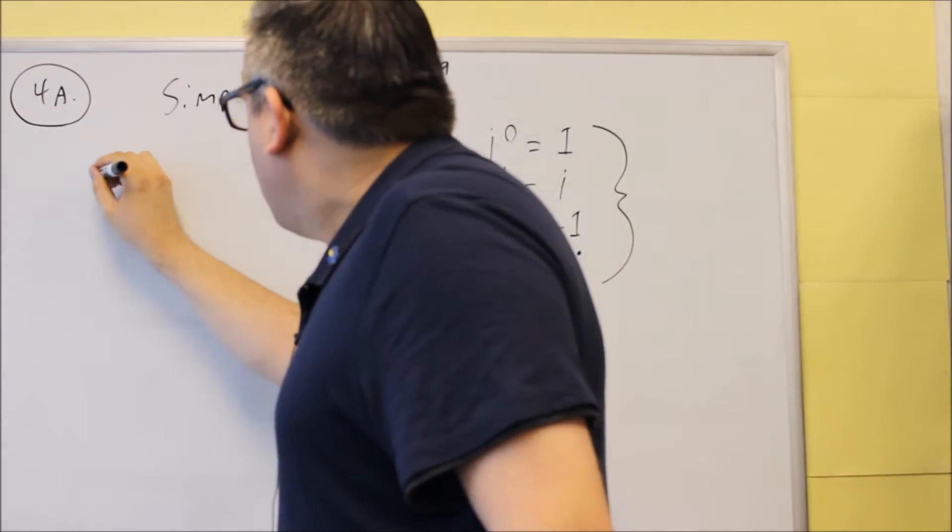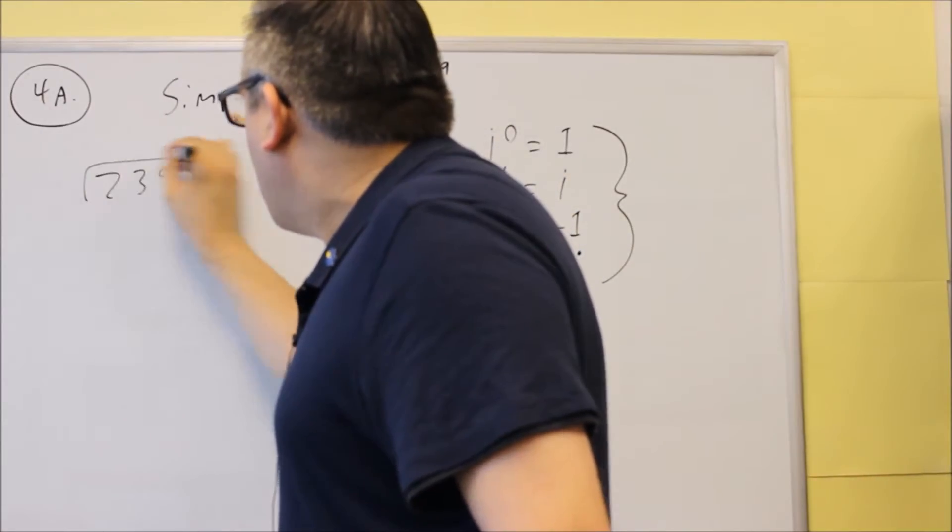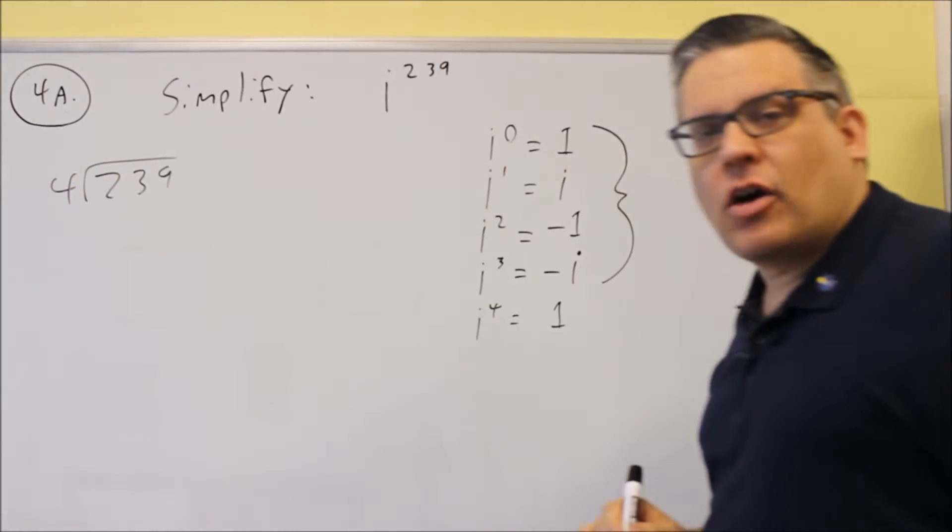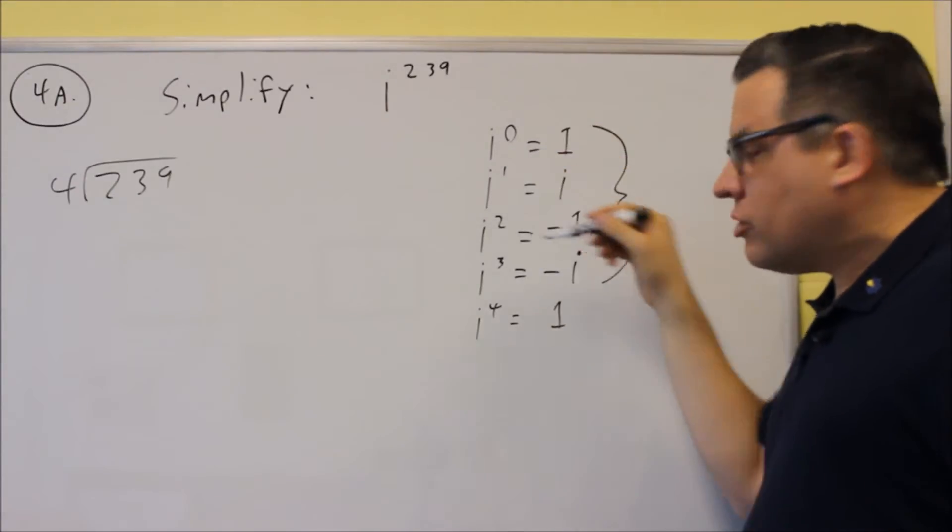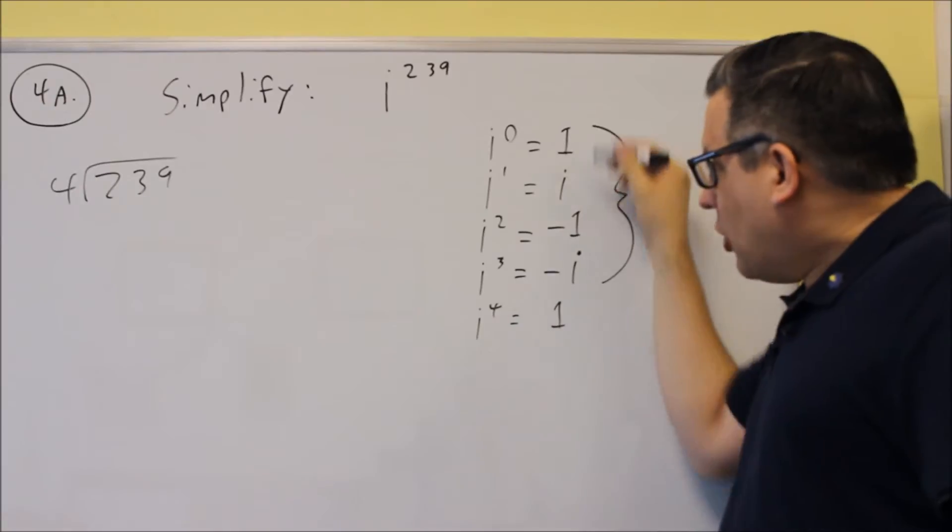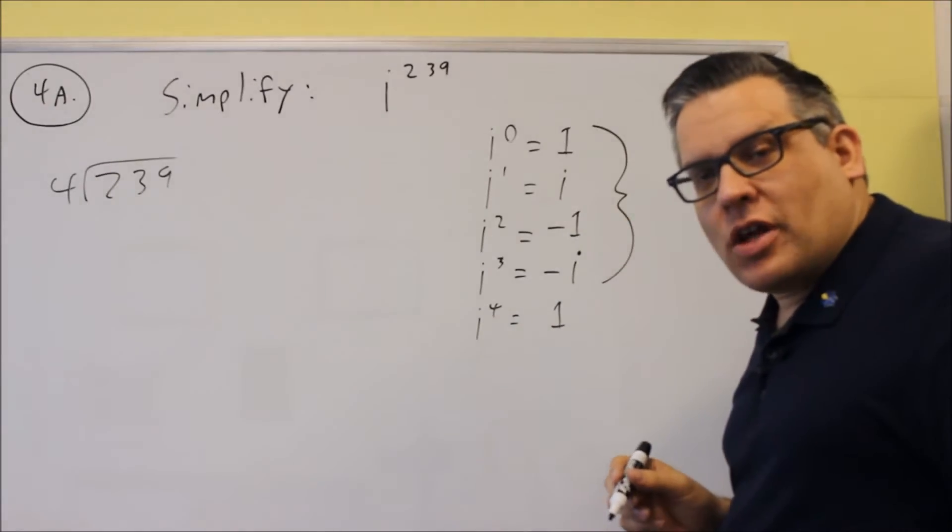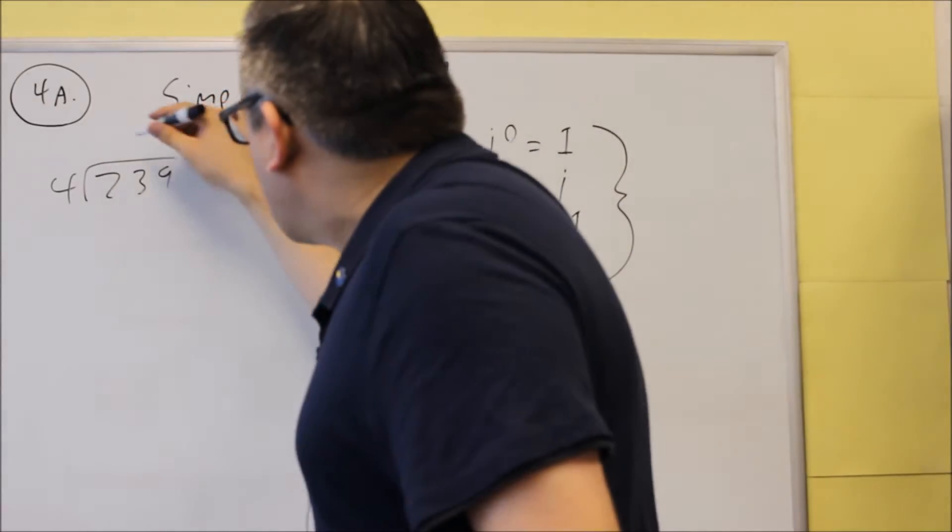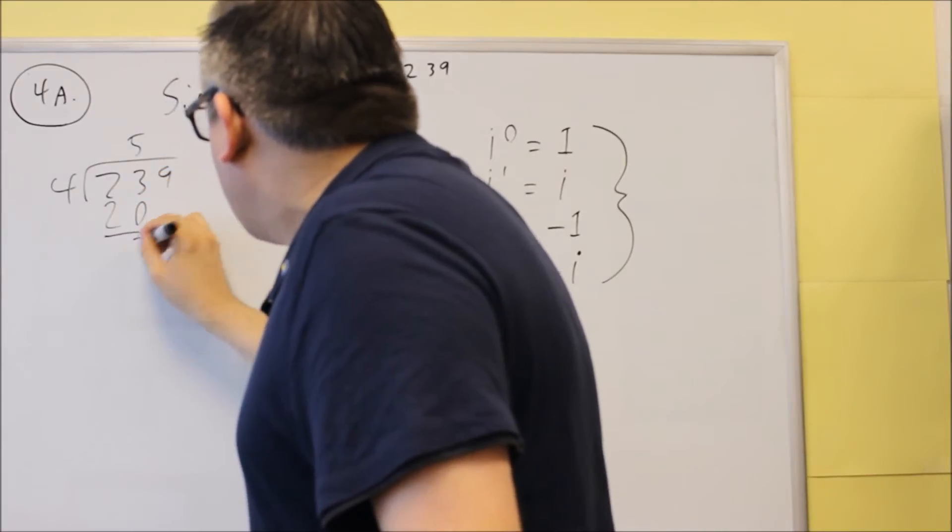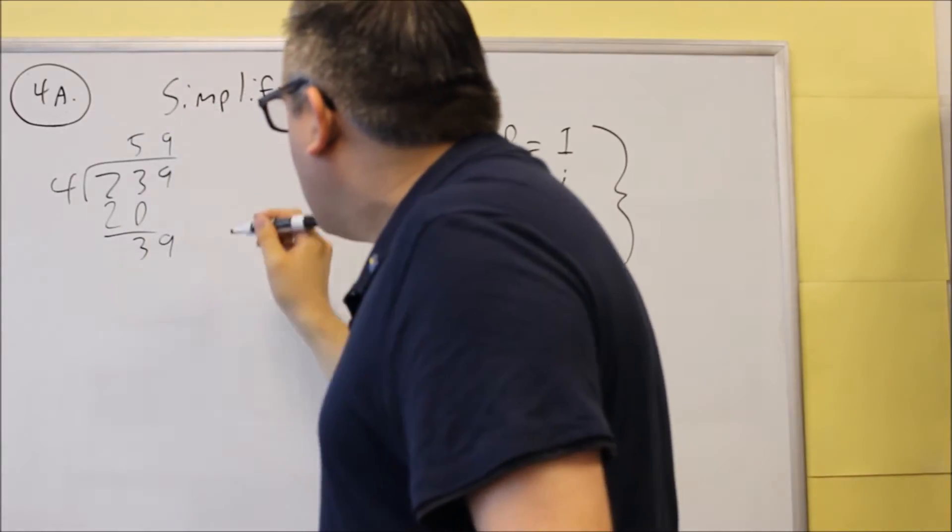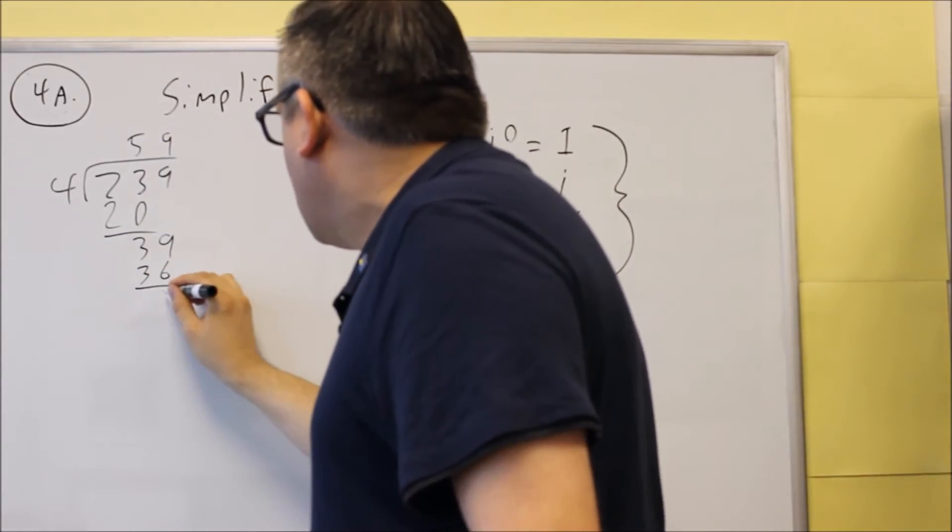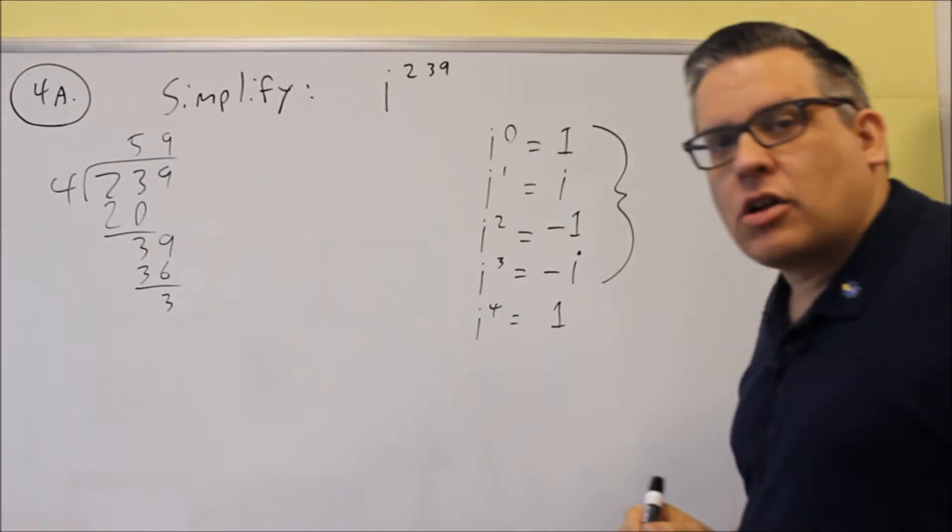So again, what we'll do is 239, I'm going to divide it by 4, and I want to find out what my remainder is. My remainder is going to have to be either 0, 1, 2, or 3, and I'll be able to indicate which that is on my list. So I do this. This one goes in 5 times here. Subtract this. 39. I can do a 9 there. That's 36. And then subtract it. I get a remainder of 3.